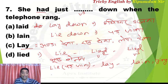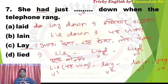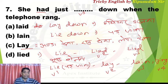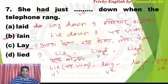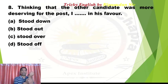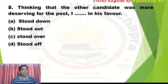So 'lain' is V3, 'lay' is V2, 'lie' is V1, and 'lying' is V4. She had just lain down when the telephone rang — so she had just reclined. We need V3 of 'lie', which is 'lain'. This is quite confusing — lain, laid, lay, lied — so please memorize all forms carefully.